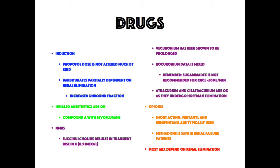Inhaled anesthetics, including nitrous oxide, are acceptable in renal failure. Compound A has been shown to develop in animal models with low-flow sevoflurane anesthesia, though it hasn't been demonstrated in human models. Typically, flows are kept at two liters per minute to help avoid the buildup of compound A.